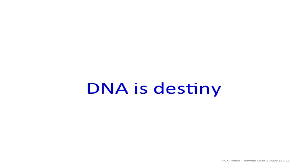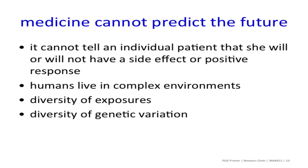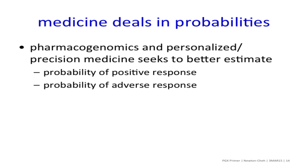"DNA is destiny" is a bit of a trope currently. It's important to communicate to the lay public that DNA is not destiny — there's nothing magical about genetic variation or a genetic sequence. Just because it's permanent doesn't mean it's deterministic. Medicine cannot predict the future; it cannot tell an individual patient whether she will or will not have a side effect or a positive response to a drug. Medicine deals in probabilities, and pharmacogenomics seeks to better estimate probabilities of positive and adverse responses. It's more appropriate for us to speak more like gamblers than people gazing into a crystal ball.